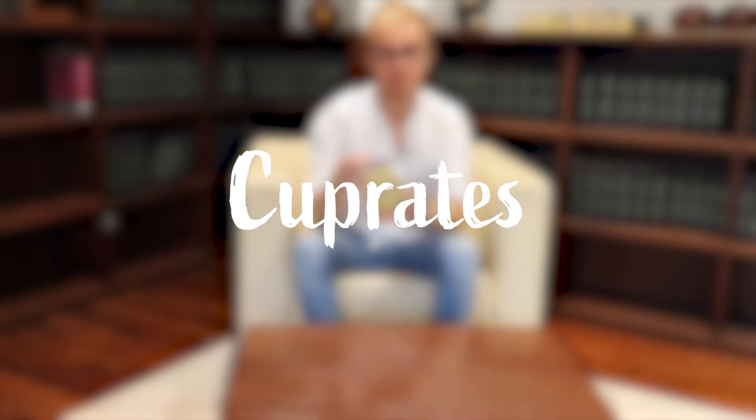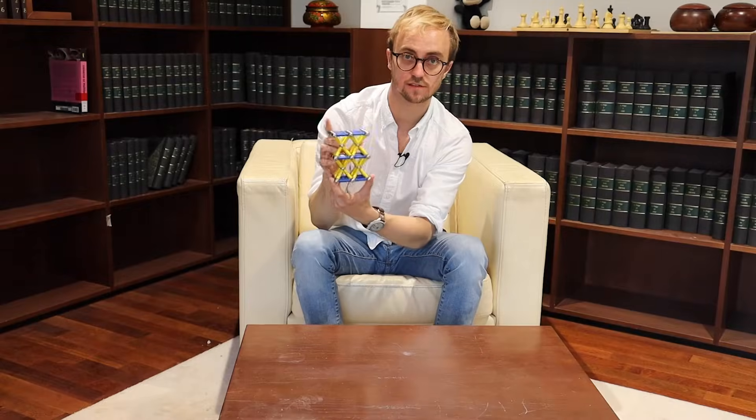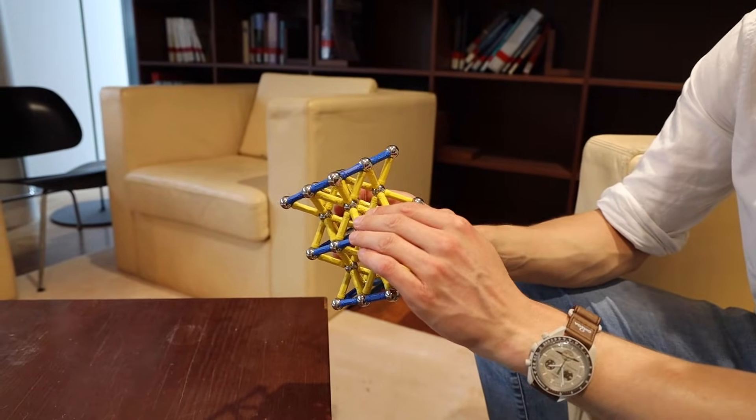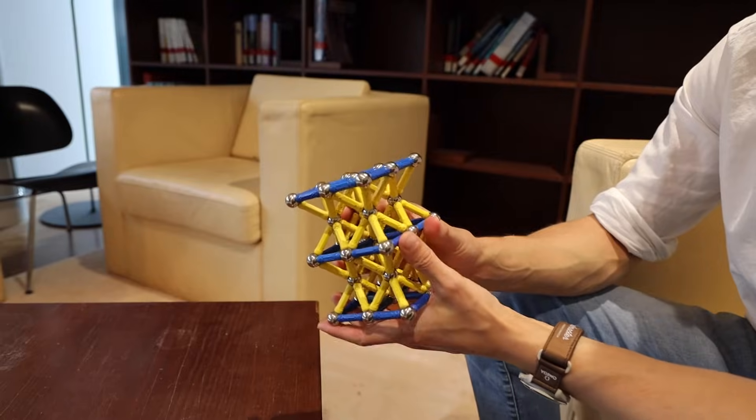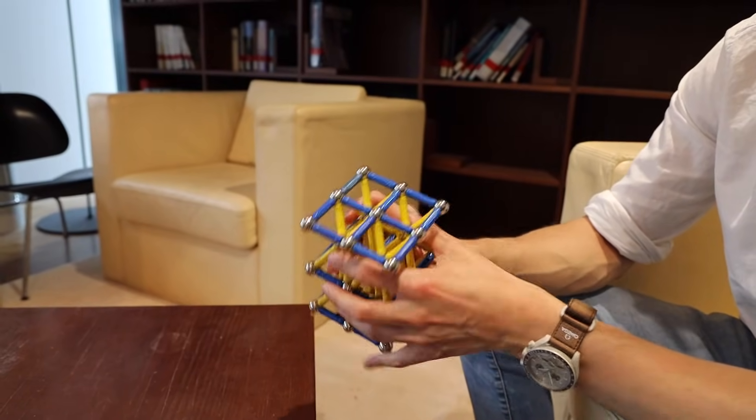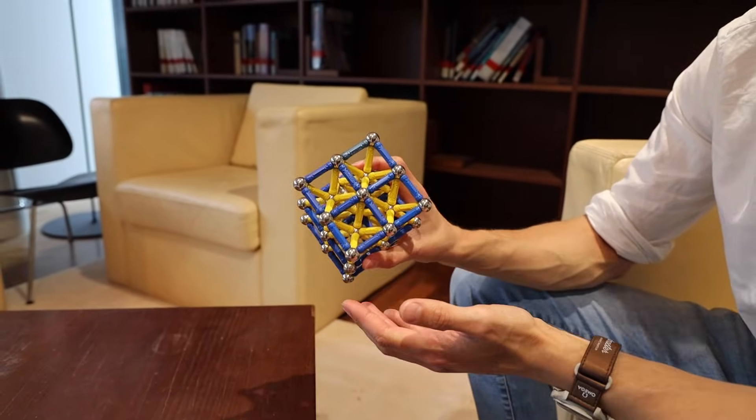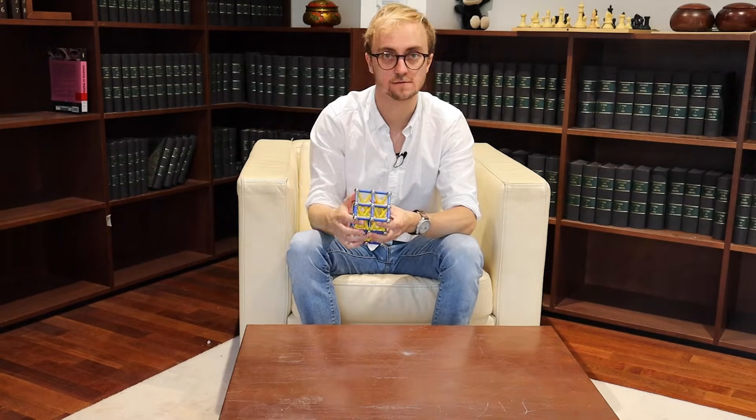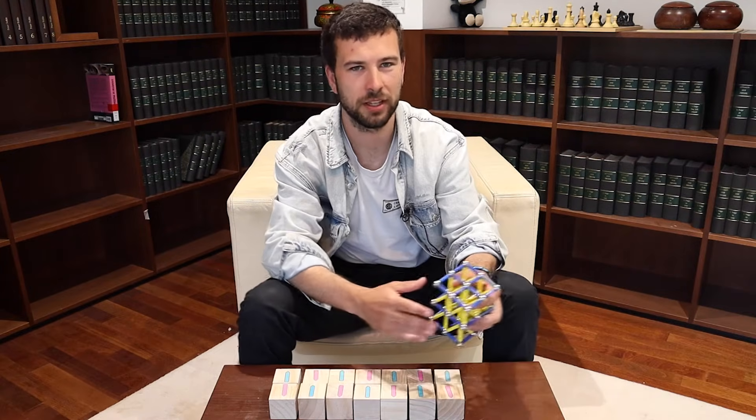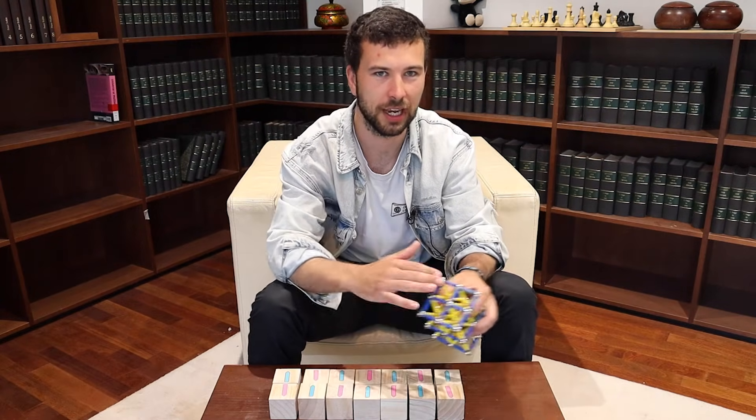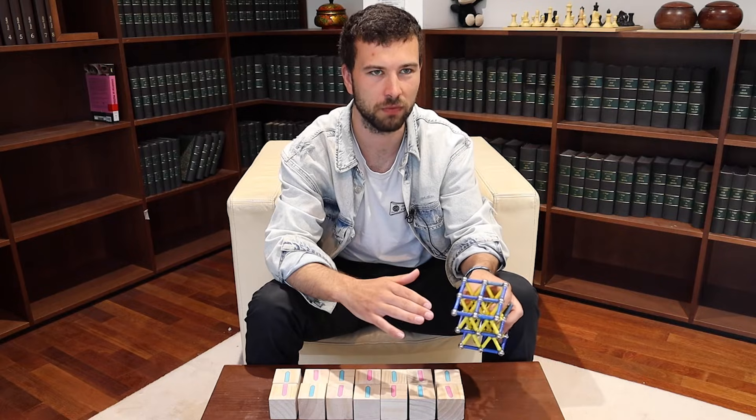A class of materials which is known to show unconventional superconductivity at high temperatures are the so-called cuprates, which look something like this where we have layers of copper and oxygen which barely interact with other layers. We can essentially model them as 2D systems on a square lattice like this. The interesting physics is when we study the layers where there are the copper and oxygen atoms.